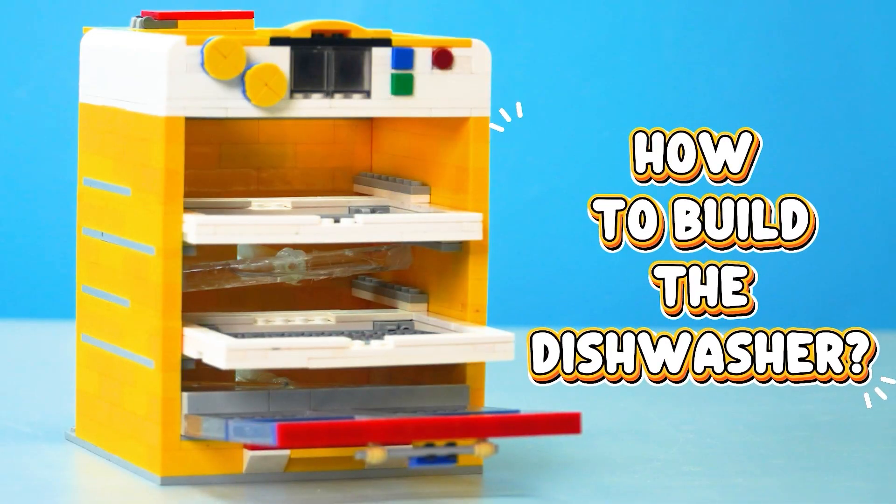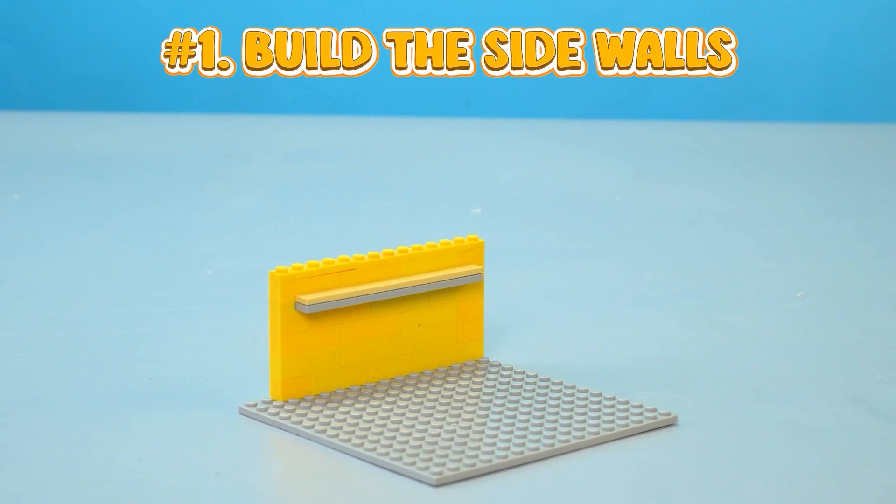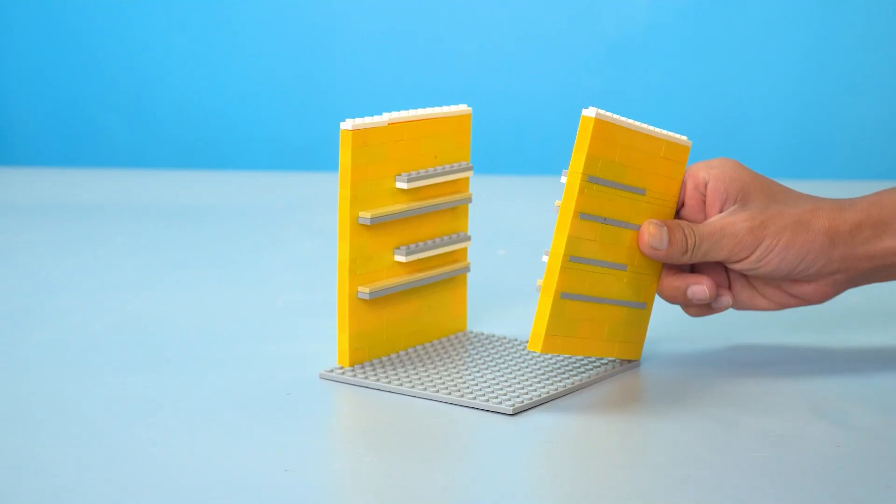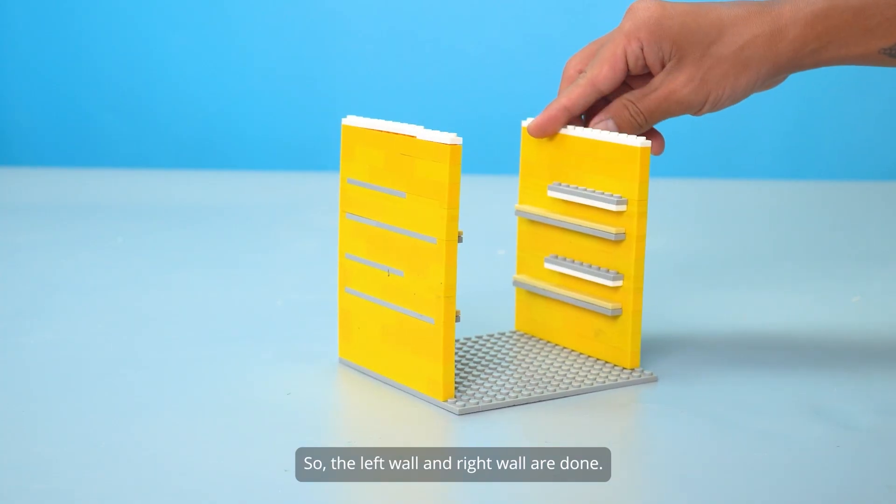How to build the dishwasher? Number 1, build the side walls. These ledges on the wall are designed to hold the dish trays in place. So the left wall and right wall are done.